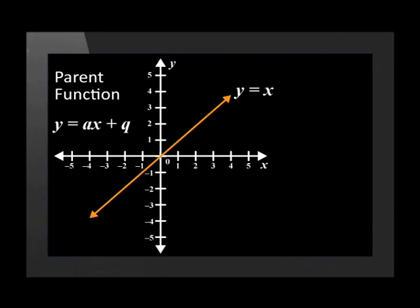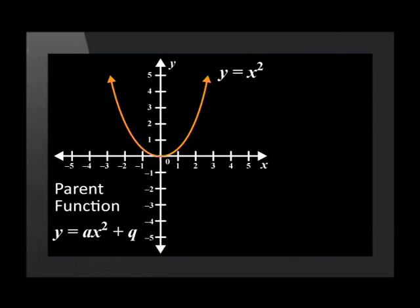The linear function is represented by a straight line and we define the function y equals x as the parent graph of the functions with an equation y equals ax plus q. The quadratic function is represented by a parabola. We define the parent parabola as y equals x squared for the family of quadratic functions. We also know how each of these parent graphs is affected by changes in the a value and the q value in their formulae.